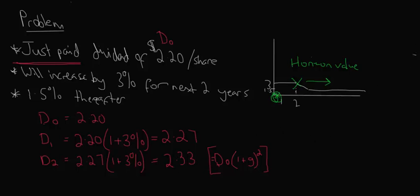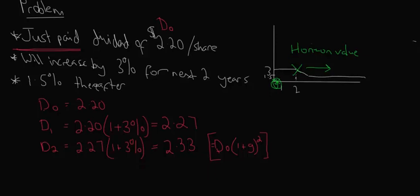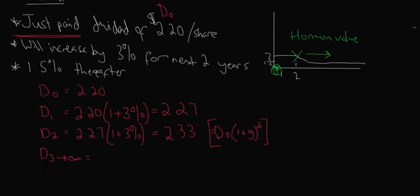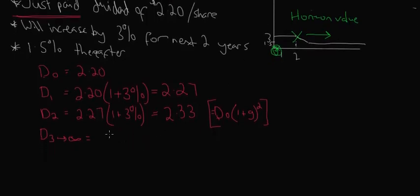Now this is where it starts getting a little bit more tricky than previously. D3 is not really the dividend that it's paying out in year three, but we have to think about the price of the company now looking from year three out and onwards into infinity, because at this point it switches to constant growth, which actually makes life a little bit easier for us because we know what the constant growth formula is. And the constant growth formula is going to be used here again. We know we're growing at 1.5% thereafter and we know that we had 2.33 from the last period.